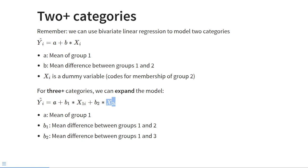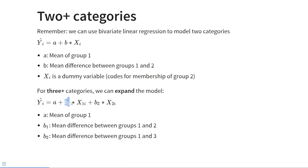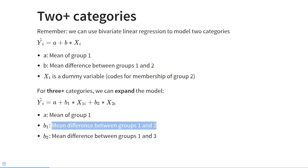What do these parameters mean? The intercept tells us the mean of group 1, which is the reference group. The first slope b₁ gives us the mean difference between group 1 and group 2. The second slope b₂ gives us the mean difference between group 1 and group 3. These two slopes allow us to compare the mean values of the groups encoded by the dummies to the mean value of the reference category, which is represented by the intercept.